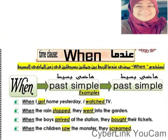We also have the word 'when.' 'When' means 'عندما' (at the time that). We use 'when' to connect two sentences in the past simple. For example: 'When I got home yesterday, I watched TV.' And: 'When the rain stopped, they went into the garden.' So 'when' is used to join two past simple sentences together. It's very simple and very easy.